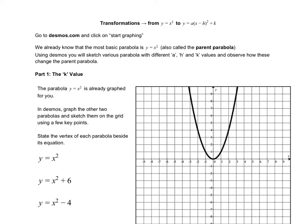All of our transformations we're going to be able to take from vertex form. So the a value, the h, and the k value, they all mean something in terms of transformations, whether it's moving around on the grid or something is physically happening to the parabola where it's being stretched, squished, or reflected.